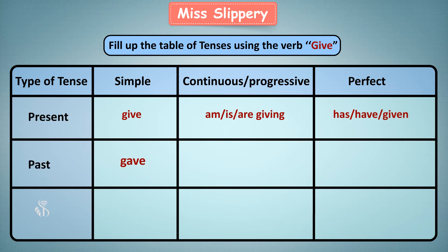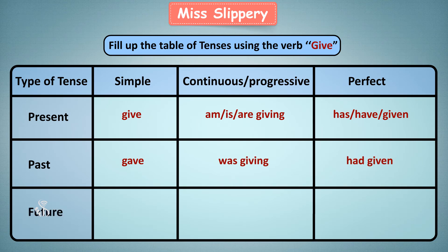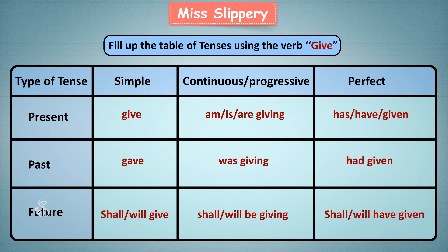Past: gave. Was giving. Had given. Future: shall/will give. Shall/will be giving. Shall/will have given.